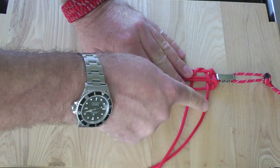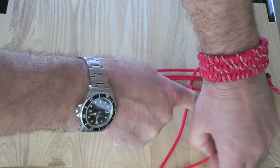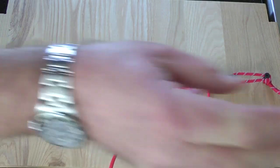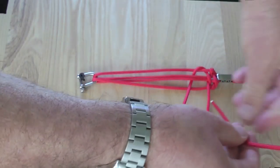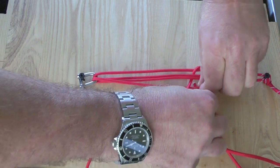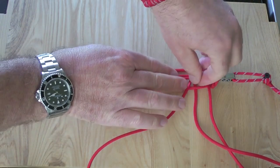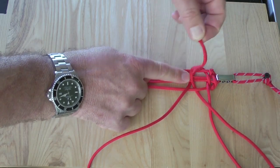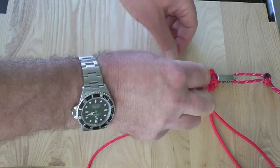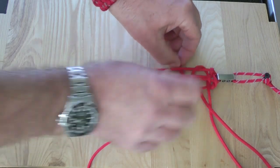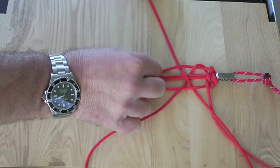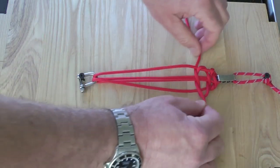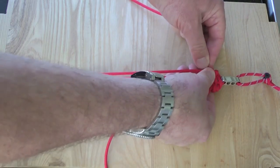Then I take the top right-hand rope, and I pass that under the outside right, through that space that I've made, over the middle two, and under the outside left. And as I pull that too, you'll now see that this is actually starting to take the shape of the braiding of the bracelet.